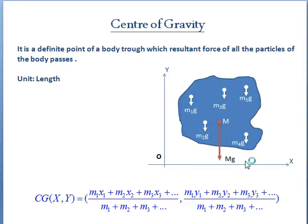Then center of gravity of that body can be determined by m1x1 plus m2x2 and so on, divided by total mass of the body. Similarly, y coordinate and z coordinate of the body can be obtained. This is a very simple formula.